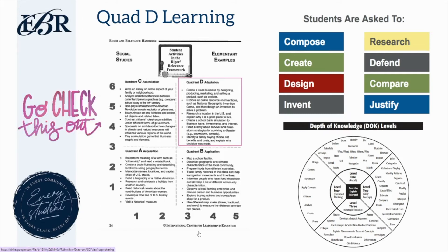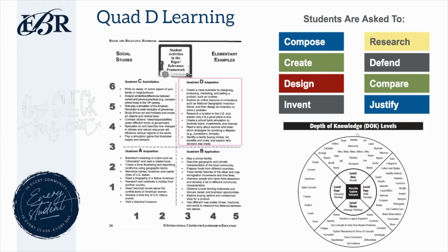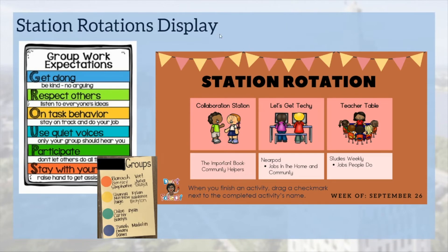The example before you is an elementary example located on our site as well. I've crafted a station rotations display so you can see what this should look like in your classroom. We always suggest that you begin by establishing your group work expectations. I've often used the groups anchor chart you see to our left. Students should get along and be kind without arguing, respect others and listen to everyone's ideas, remain on task and do their job, use quiet voices, participate, and stay with their groups. To cut down on confusion, I always use the motto 'ask three before me,' because there's guaranteed to be someone within their group who could answer any questions students may have.